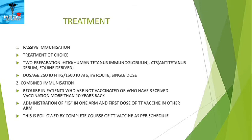For treatment, the first method is passive immunization, which is the treatment of choice. Two preparations are available: HTIG (human tetanus immunoglobulin) and ATS (anti-tetanus serum), which is equine-derived. The dosage is 250 international units of HTIG or 1500 international units of ATS by intramuscular route in a single dose. Combined immunization is required for patients who are not vaccinated or who received vaccination more than ten years ago, involving administration of immunoglobulin IM and the first dose of tetanus toxoid vaccine.